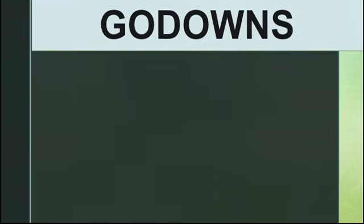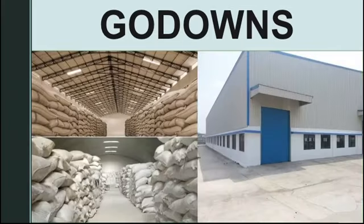After harvesting, the food needs to be stored in a safe place, otherwise it will get spoiled. From the farms, food is carried to storage places called godowns. Godowns are kept dry and airy, and are also kept free from insects and animals like rats that eat the food items.